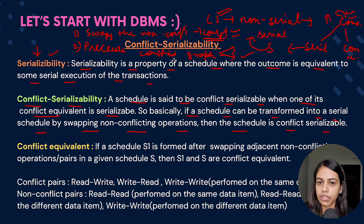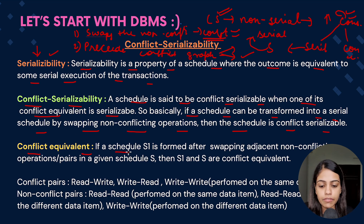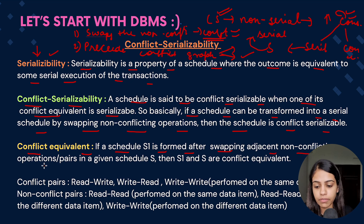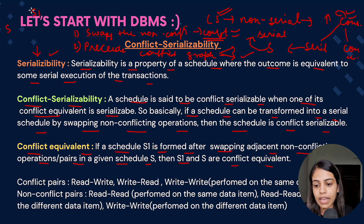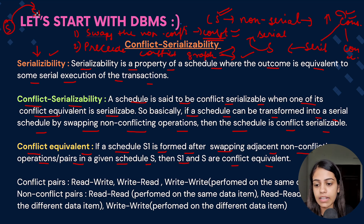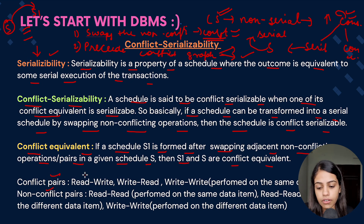Conflict equivalent: if a schedule S1 is formed after swapping adjacent non-conflicting operations in a given schedule S, then S1 and S are conflict equivalent. If S1 is formed after swapping the non-conflicting operations of S, we can say these particular schedules are conflict equivalent.